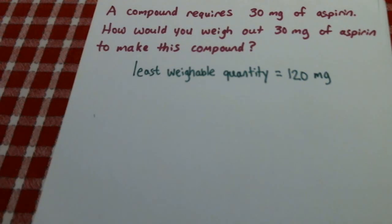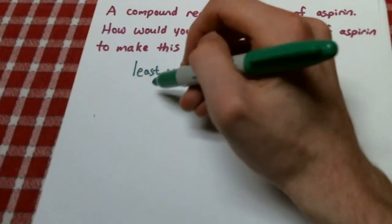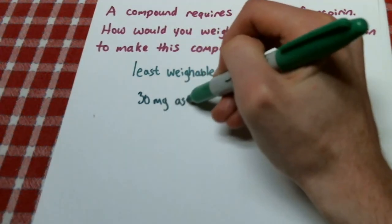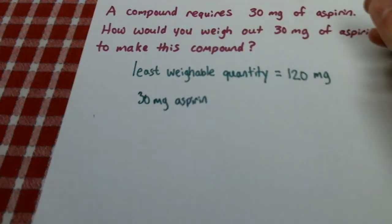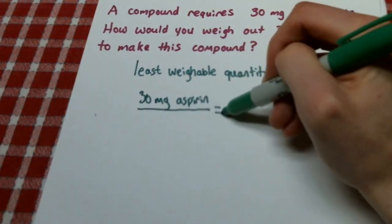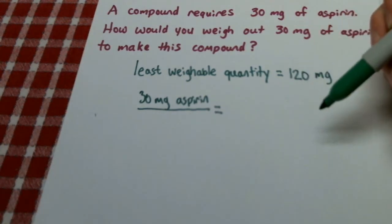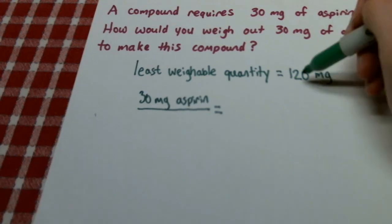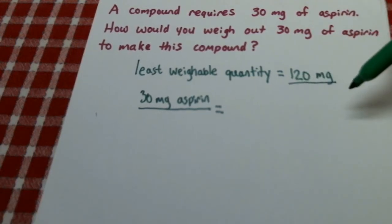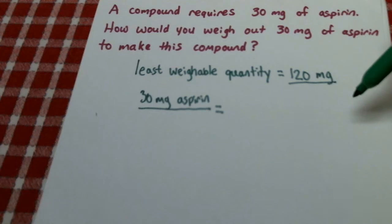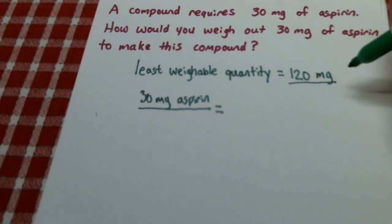If we try to set up a proportion as one way to look at how to solve this problem: the ultimate goal is 30 milligrams of aspirin. But 30 milligrams of aspirin is something I can't weigh out by itself. However, if I combine this with an inert ingredient and weigh out a 120 milligram sample of a mixture of that inert ingredient and aspirin, I want that sample to contain 30 milligrams of aspirin.